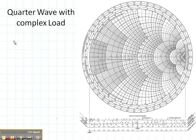Now let's do one last case. Let's suppose that we have a load that's complex. Let's use our favorite old load here. 100 plus J100 ohms on a 50 ohm transmission line.